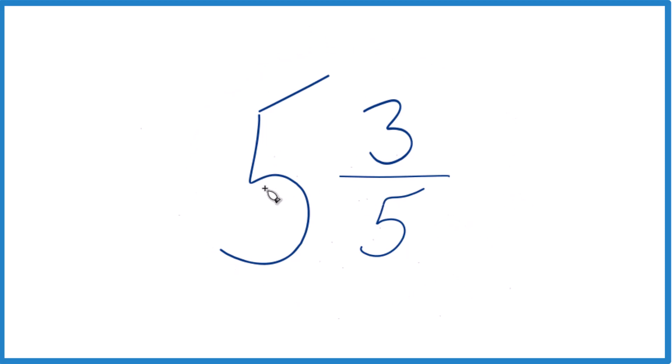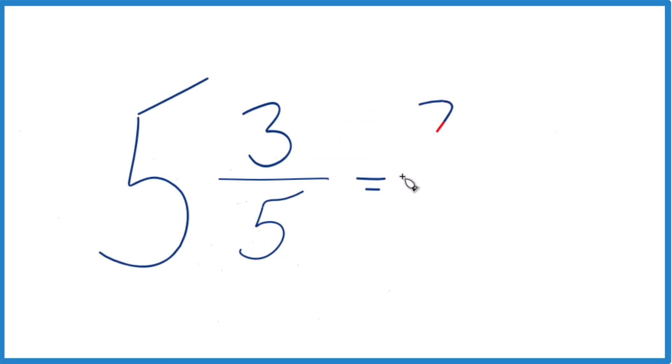You take the whole number 5 times 5. 5 times 5, that's 25. Then you add 3. 25 plus 3 is 28. That's the numerator. Bring the 5 across. That's the denominator. You're done.